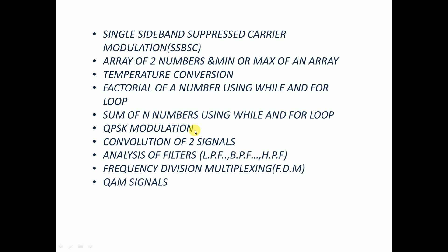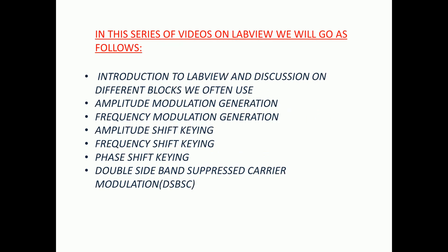Next we are going to deal with QPSK — quadrature phase shift keying modulation — then convolution of two signals using the convolution block. We will also do analysis of filters: low pass filter, band pass filter, and high pass filter, examining how signals travel and how frequencies are attenuated. Finally, we will cover frequency division multiplexing and quadrature amplitude modulation signal generation.